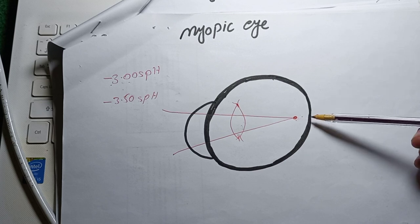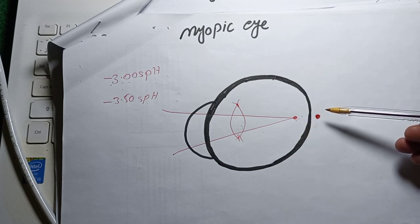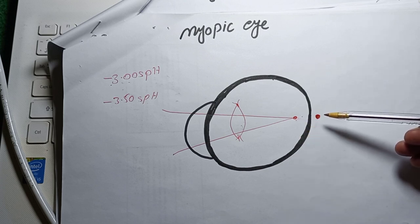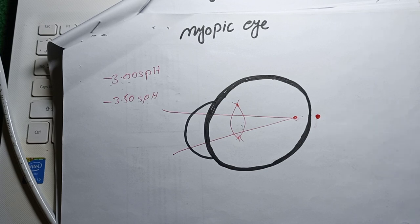Over-correction of the minus spherical lens exerts accommodation, and excess use of accommodation causes asthenopic symptoms. That is why we always prescribe maximum plus — meaning full plus correction — and minimum minus in subjective and objective refraction.